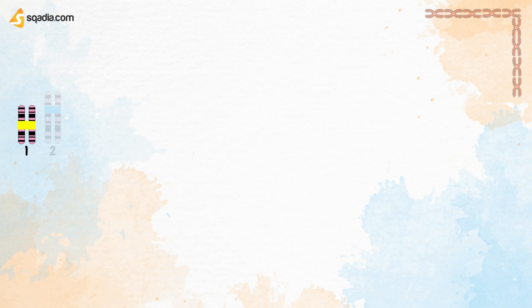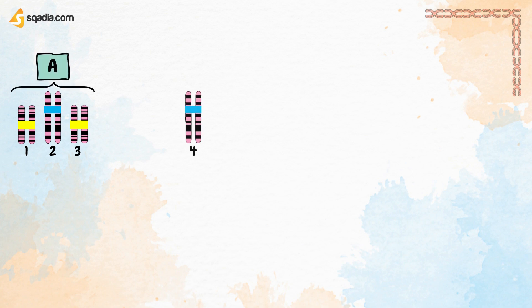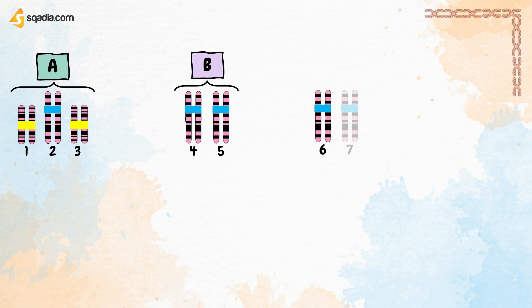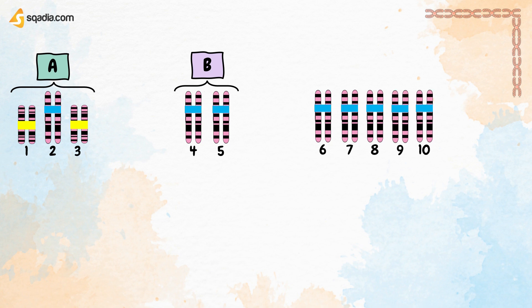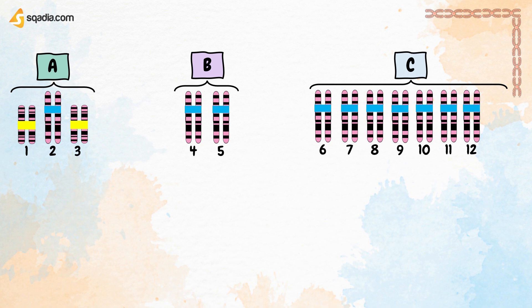Chromosomes 1, 2, and 3 are in group A. Chromosomes 4 and 5 are in group B. Chromosomes 6, 8, 9, 10, 11, and 12 are in group C. Group C also includes chromosome X.